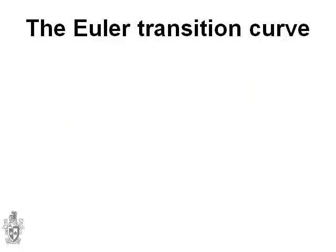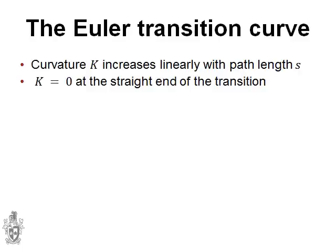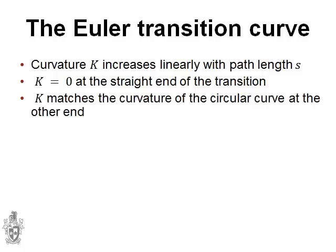The Euler transition curve is a particular transition curve which increases the curvature linearly from zero to the curvature of the circular curve. Being a transition curve, of course, we've got the curvature equal to zero at the straight end of the transition. And of course, the curvature matches the curvature of the circular curve at the other end.